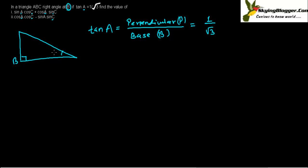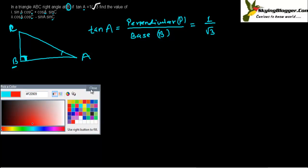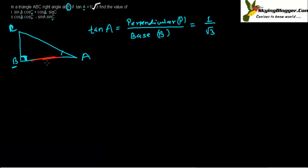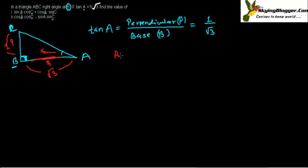So perpendicular — suppose this is angle A and this is angle C. The side in which the angle sits is always the base. The opposite side of the angle is always the perpendicular. So perpendicular upon base equals 1 upon root 3, meaning perpendicular is 1 and base is root 3. Now I have to find the hypotenuse, which is the longest part.